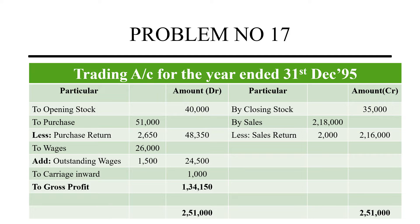On the debit side, opening stock is Rs. 40,000. Purchases are Rs. 51,000, less purchase returns of Rs. 2,650, giving net purchases of Rs. 48,350. Wages are Rs. 26,000 — we add outstanding wages to get Rs. 24,500 adjusted. Carriage inwards, which relates to goods coming into the factory, is Rs. 1,000. The balancing figure gives us a gross profit of Rs. 1,34,150.